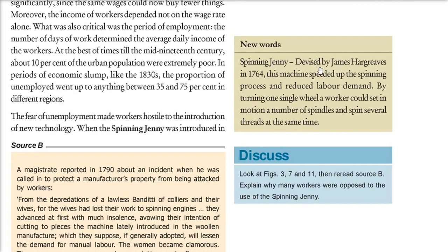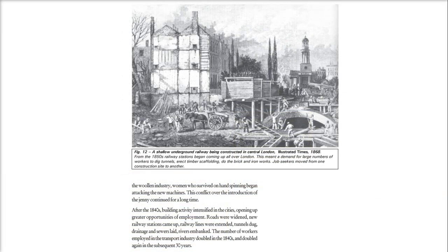The spinning jenny was devised by James Hargreaves in 1764. This machine speeded up the process of spinning and reduced labor demand. By turning one single wheel, a single worker could set in motion a number of spindles and spin several threads at the same time. Because of the fear of unemployment, people — mostly women — started attacking these new machines.